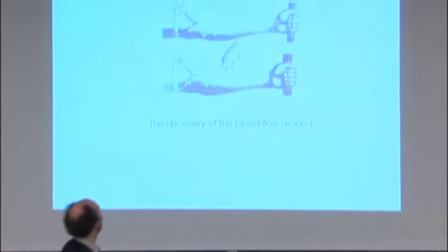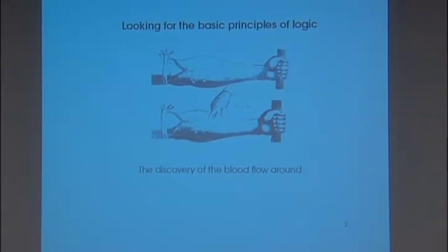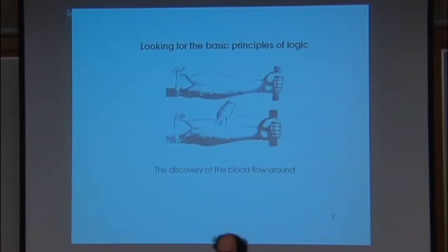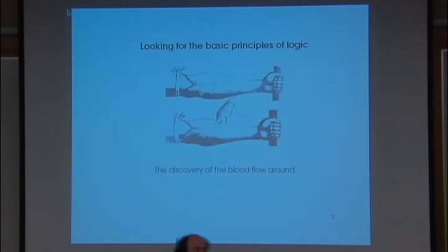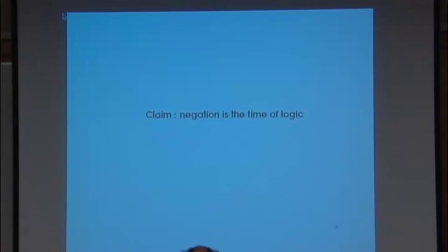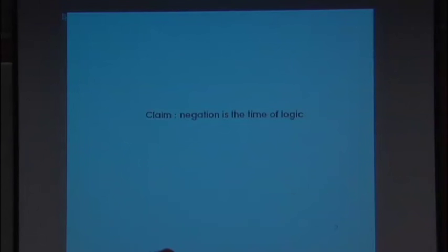I like this picture of people trying to understand blood flow a long time ago. In a way, we're trying to do something similar — we're trying to understand the flow of control. When we have a program with different procedures, it's important to know who controls what. We will see that what we try to extract from the logic is some very basic notion of flow and time. There is this basic claim that negation is the time of logic, because it is the turn in games — if I give you my turn, it takes some time.